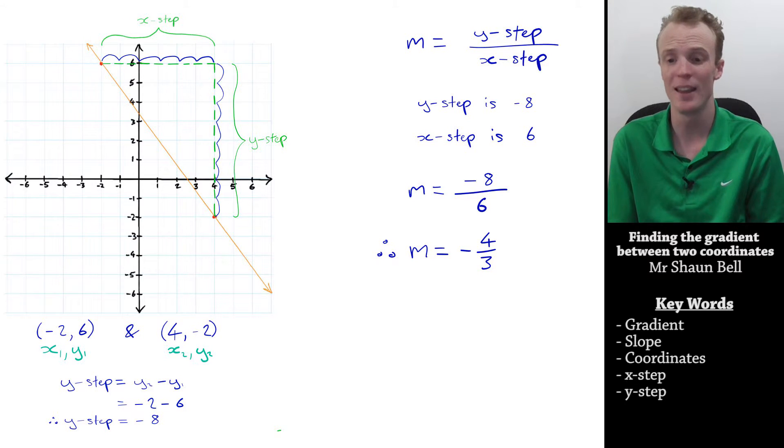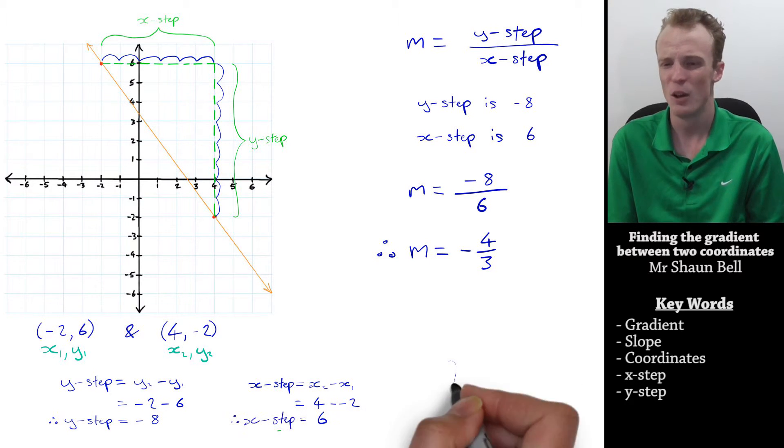We can do the same thing here with the x step. The difference is, it's going to be x2 subtract x1, which is 4 subtract negative 2. Therefore, our x step is equal to positive 6, which, once again, is what we found before.